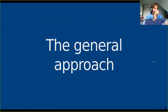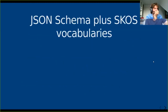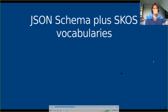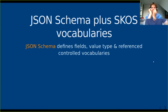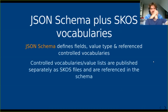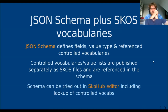The profile is being developed as a JSON schema first, which defines the fields, value types, and controlled vocabularies used. The controlled vocabularies are published separately as SKOS files and referenced in the schema. This schema can then be tried out in a SKOHUB editor — I'll show you soon. You can try it out, see how it works, look up the vocabularies, and so on.